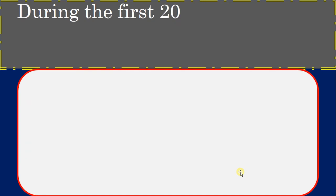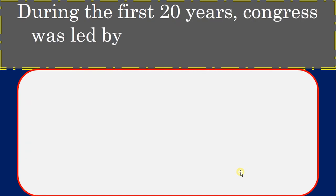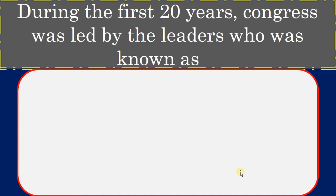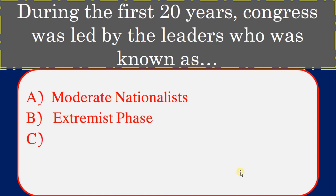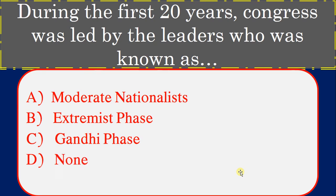During the first 20 years, Congress was led by leaders who were known as what? Options: Moderate nationalists, Extremist phase, Gandhi phase, None. Correct answer: Moderate nationalists.